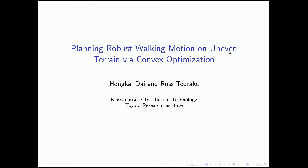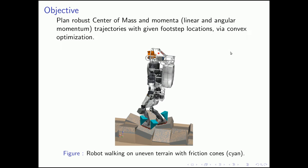In this paper, we will talk about how to plan robust walking motion on uneven terrain via convex optimization. Our objective is to plan robust center of mass and momentum trajectory with given footstep locations, as shown on the bottom plot, where a robot walks on uneven terrain with friction cone constraints. We plan to obtain such motion through convex optimization.